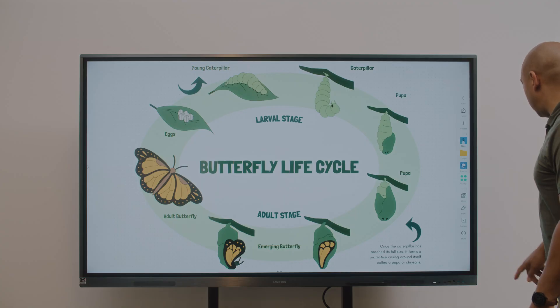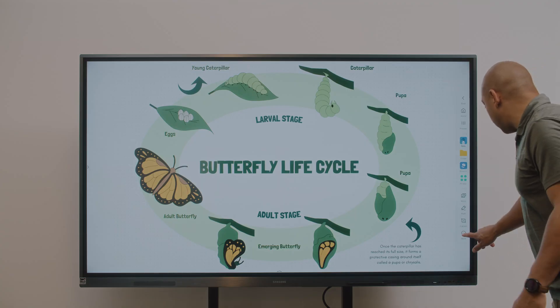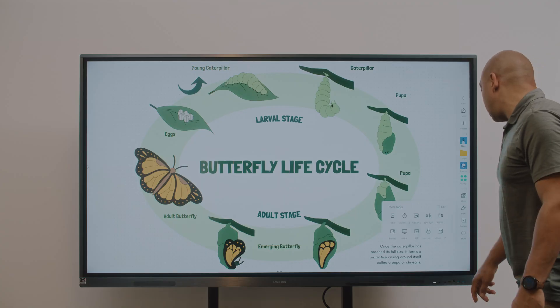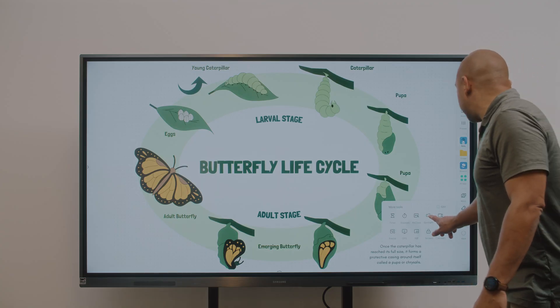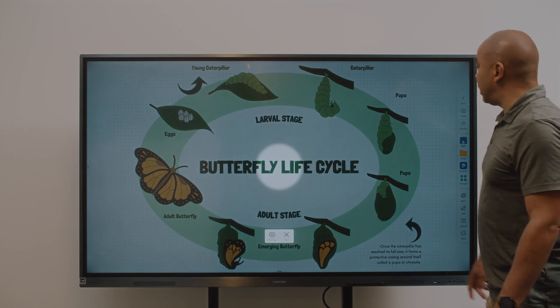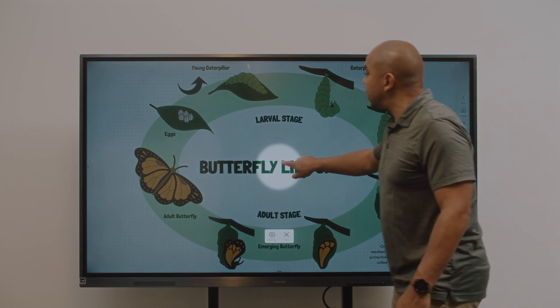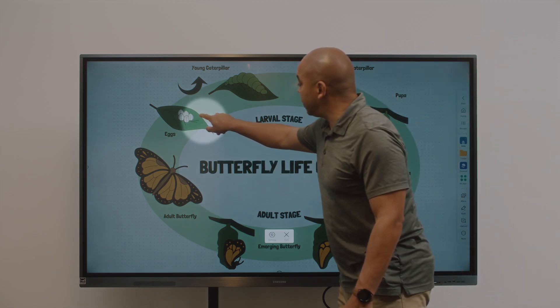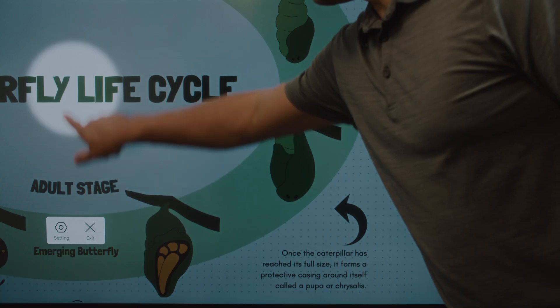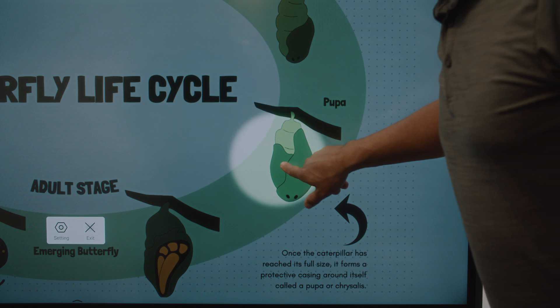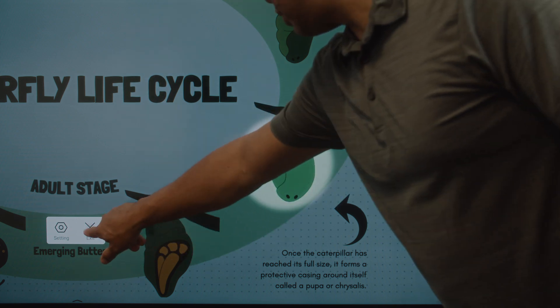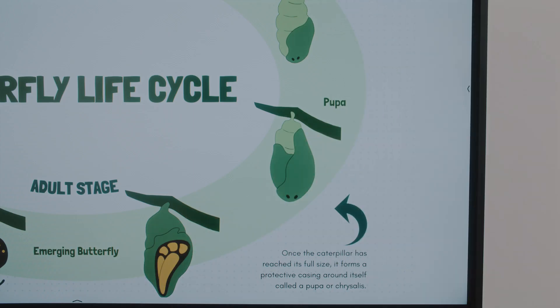Need to focus attention on a complex image or diagram? The Spotlight tool lets you zero in on specific details, then easily return to the larger picture for context.